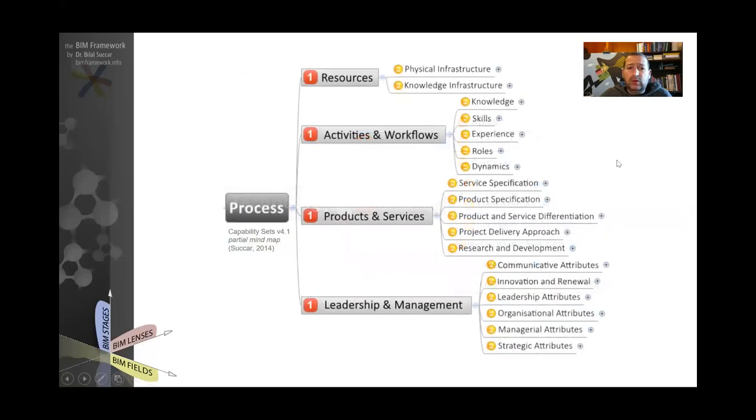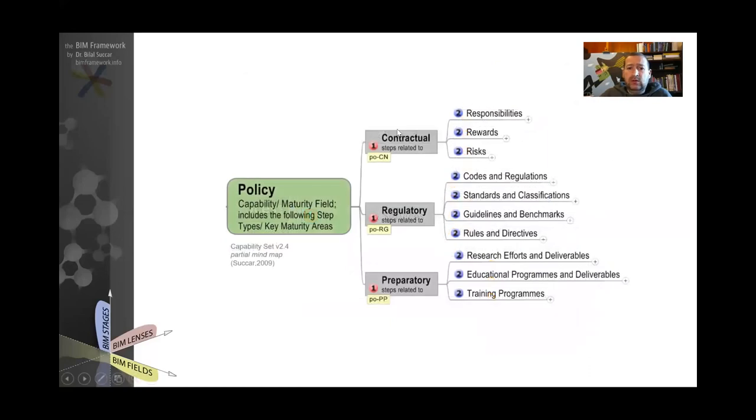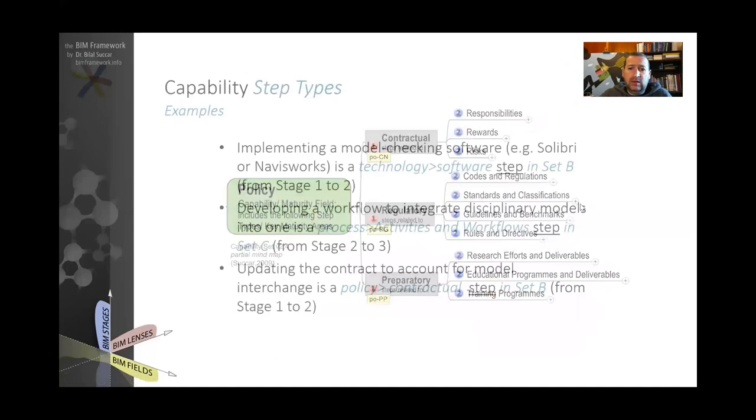If you look at process, there are resources, activities and workflows, products and services, leadership, and management. These are also step types. If we look at the policy, there are contractual, regulatory, and proprietary step types. So let's just look at a couple of examples.